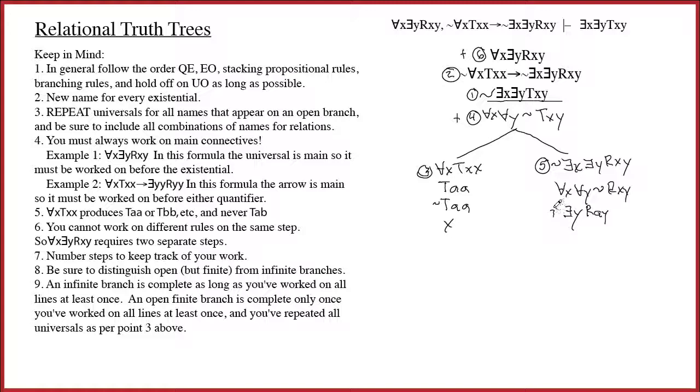Okay, so step number seven is to work on this existential, and of course I have to choose a new name for the existential, so I end up getting R, A, B here. At this point I look at these two universals and I say, well wait a second, I can now just work on this, and I will get tilde R, A, B, and that will close this, and I'm done.